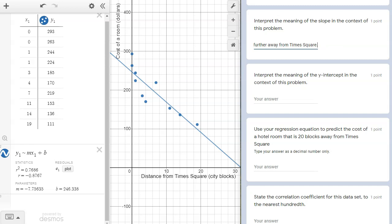Put simply, the negative 7.76 means that the room cost decreases by $7.76 for every block we move further away from Times Square. This is consistent with what we observed before we did any graphing.